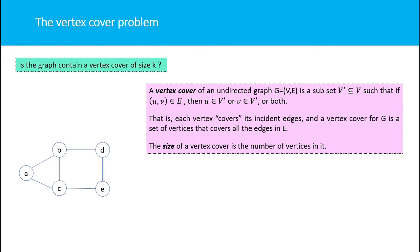Consider vertex B — it covers three edges: BA, BC, and BD. Vertex E covers edges ED and EC. Vertex A covers edges AB and AC. So these three vertices A, B, and E cover all the edges in the graph.